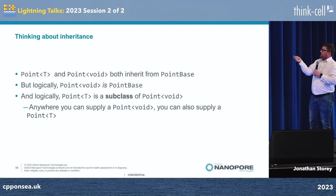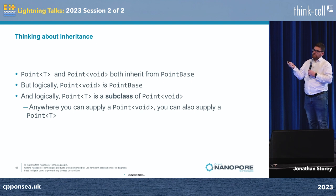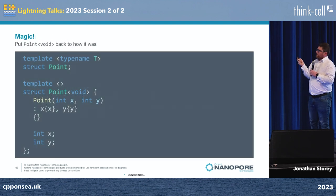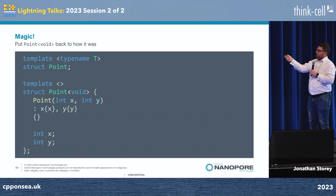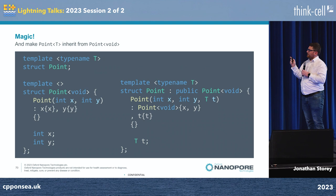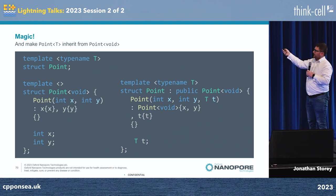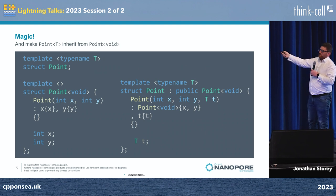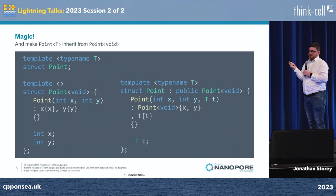Logically, anywhere that you use a point<void>, you can also use a point<T>. Which means, if we define the specialization point<void>, this is the bit that looks a bit weird — you can inherit from point<void> in your base definition. I was surprised when I first wrote this and it actually compiled. This is a bit like the CRTP — it's neat once you've seen it.